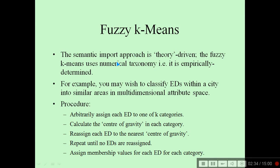Fuzzy k-means: the semantic import approach is theory-driven, whereas fuzzy k-means uses numerical taxonomy — it is empirically determined. For example, you may wish to classify enumeration districts (EDs) within a city into similar areas in a multidimensional attribute space. The procedure arbitrarily assigns each ED to one of the key categories, calculates the center of gravity of each category, reassigns each ED to the nearest center of gravity, repeats until no EDs are reassigned, and then assigns membership values for each ED for each category.